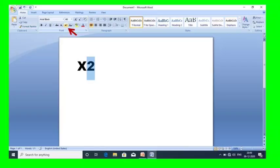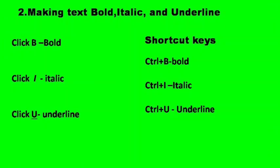The second one is making text bold, italic, and underline. If you want to display the content in bold, we just select the B icon in the menu. If you want to change the content to italic format, we just select the I icon in the menu. If you want to underline some content, we use the underline icon. The shortcut keys are Ctrl+B for bold, Ctrl+I for italic, and Ctrl+U for underline.